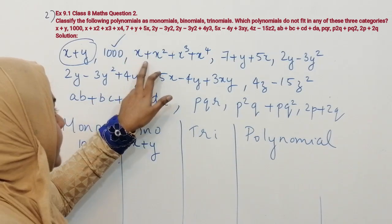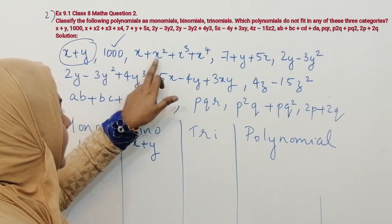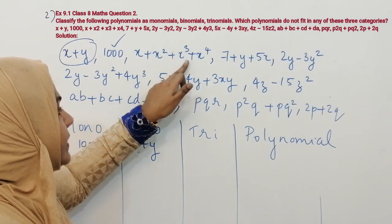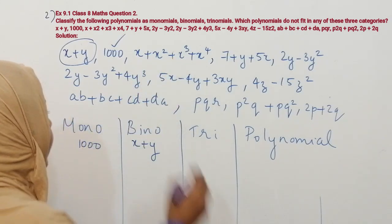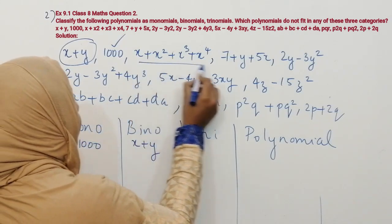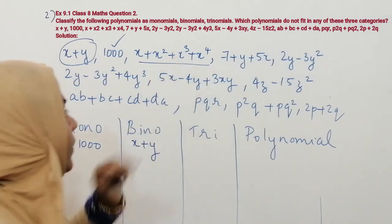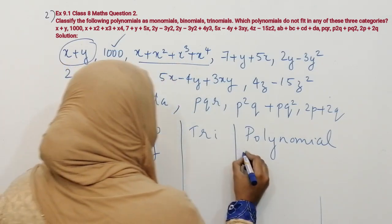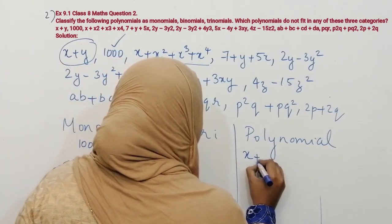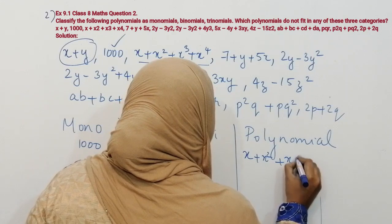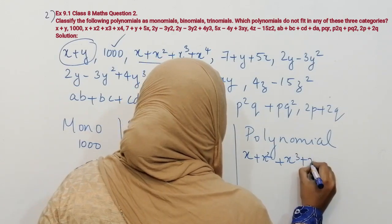The third one is x plus x squared plus x cubed plus x to the power 4. It has four terms, so it is under polynomial.